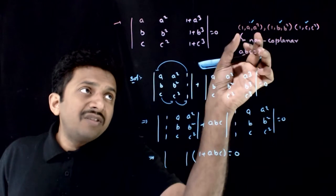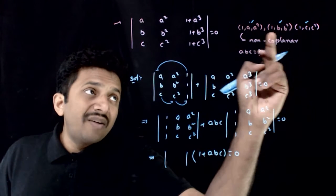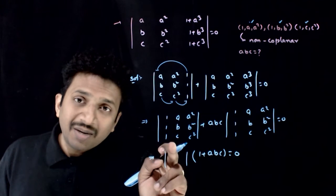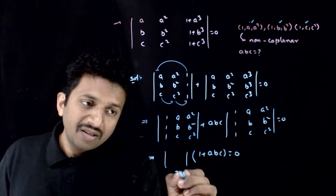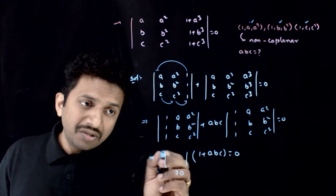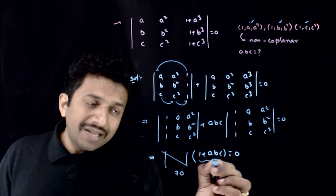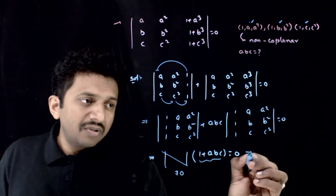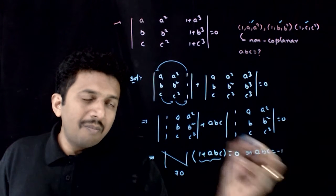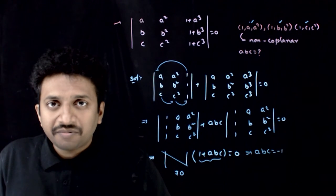And you can see, this determinant is made up of these three vectors. These three vectors are not coplanar. That means, this determinant is not equal to 0. So, this is not equal to 0. So, this can be cancelled. So, 1 plus A, B, C has to be equal to 0. So, A, B, C is equal to minus 1 is the answer. Thank you.